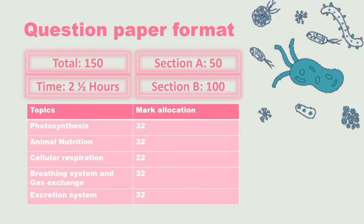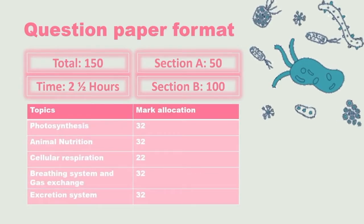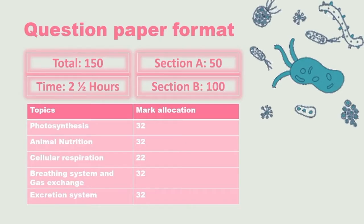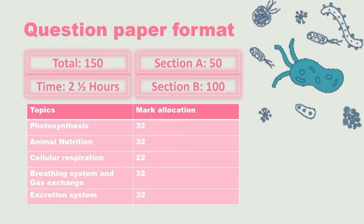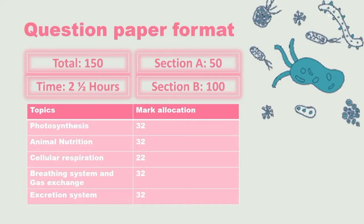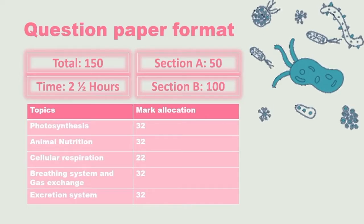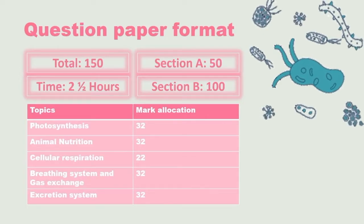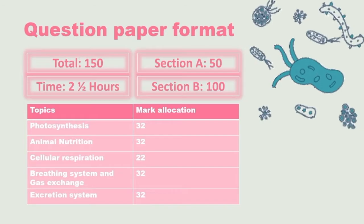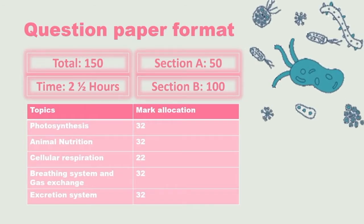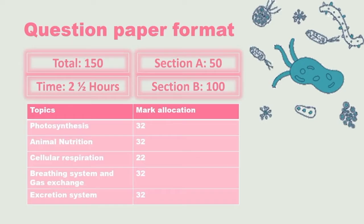If you look at the given table you will see the specific topics and the mark allocations. We have photosynthesis, animal nutrition, cellular respiration, our breathing system and the excretion system. Let's have a look at each of these topics and explain what is expected from us.